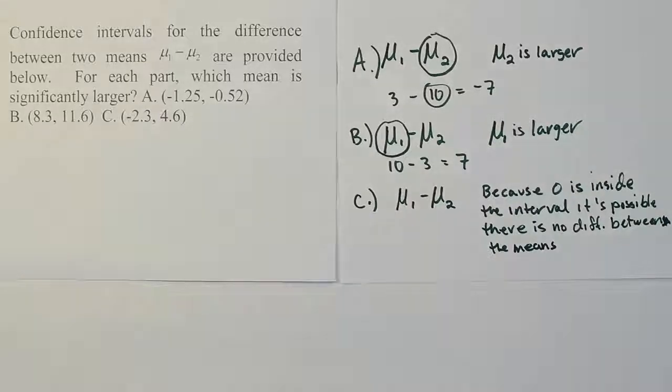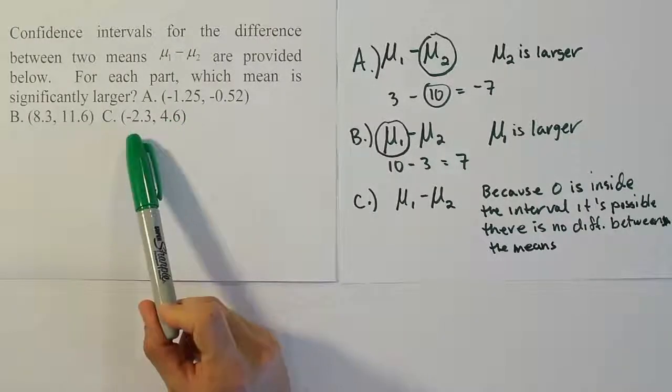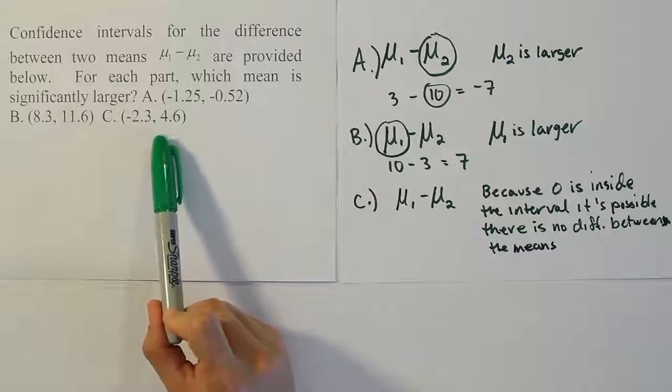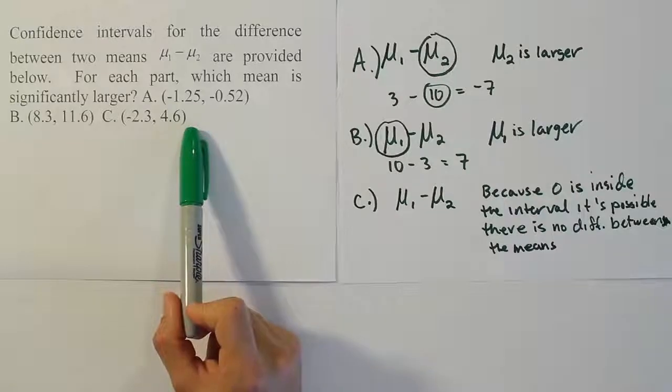Okay, so because 0 is inside the interval, it's possible there is no difference between the two means. Now you can see that the positive side is a little bigger than the negative side. So in other words, the distance from negative 2.3 to 0 is a smaller distance than it is from 0 to 4.6. So that means actually that this interval is slightly more positive,